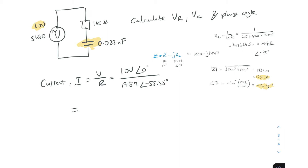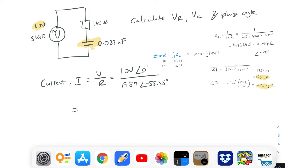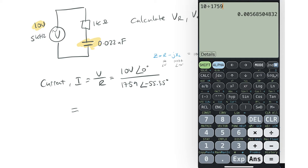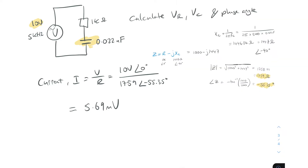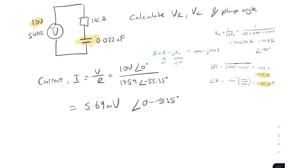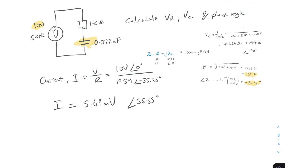So we do 10 divided by 1759, which gives us 5.685, so approximately 5.69. For the phase angle, we do 0 minus (minus 55.35°) — two minuses make a plus — giving 55.35 degrees. So our current is 5.69 milliamps at 55.35 degrees.